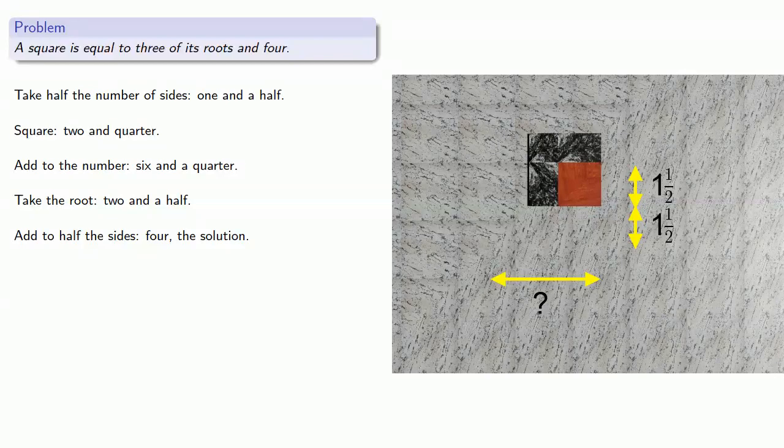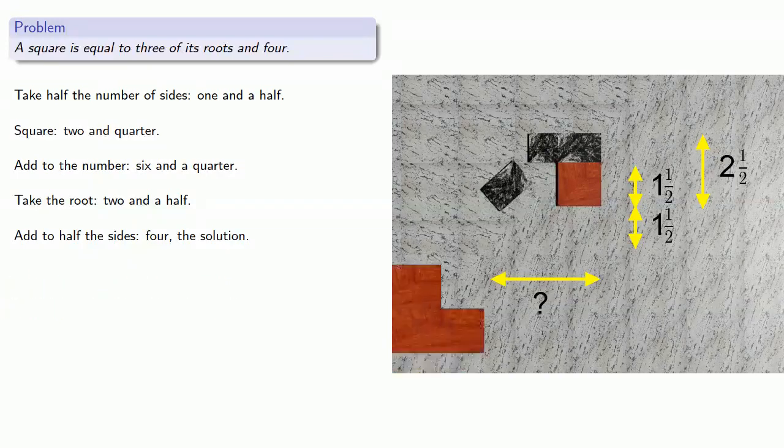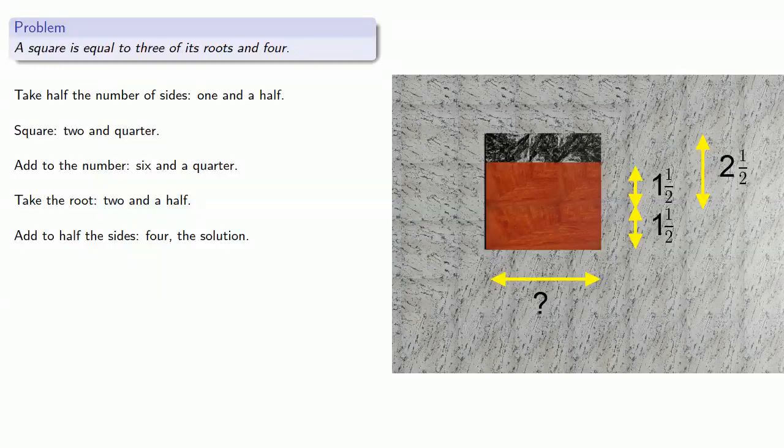So if we add it to the square, we get the area of the complete square, and the square root will give us the entire side, 2 and a half. And finally if we restore our original square, we see that we can add 2 and a half and 1 and a half to get the side of the original square, 4.